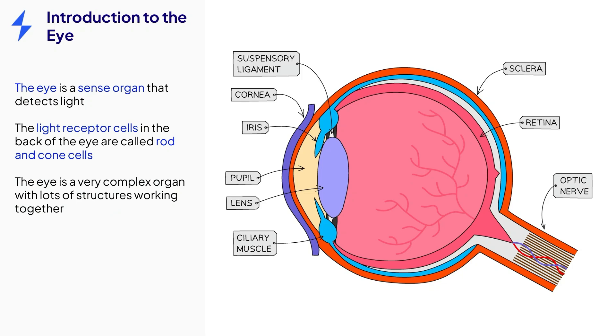The eye has a very large number of structures within the organ that allow it to carry out its function. Over the course of this video, I will break up these parts into small groups based on their position in the eye.